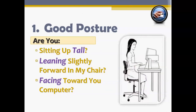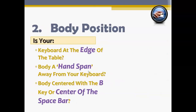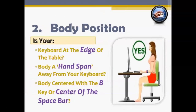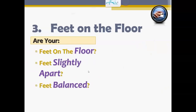Good posture means sitting up tall, leaning slightly forward in your chair, and facing toward your computer. If you're not doing these, you're developing bad posture, which can cause serious health effects. Your body position is also important — the keyboard should be at the edge of your table, your body should be a hand span away from the keyboard, and you should be centered at the B key or the middle of the space bar. Feet flat on the floor, slightly apart, balanced.